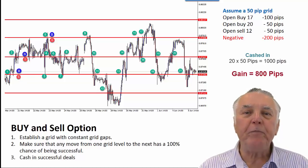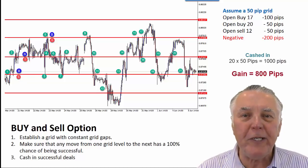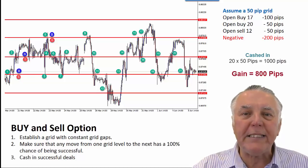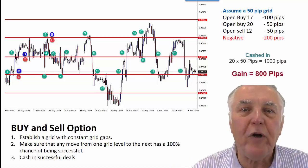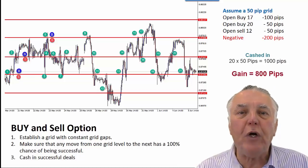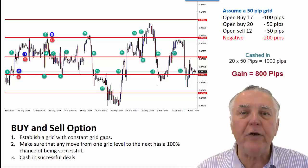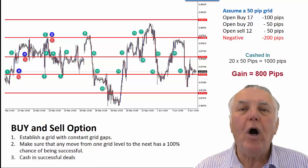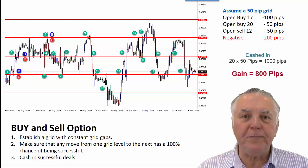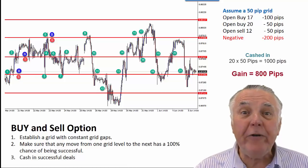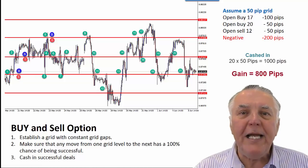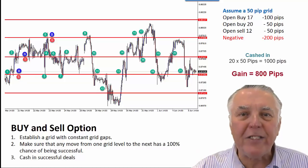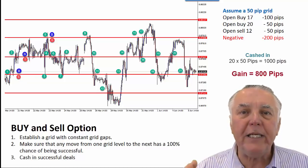The first rule is you take the chart that you want to trade and you divide it into equal distance lines — like I've shown here, see the red lines. Those are what I call grid lines. So what you've done is you've created a grid on your trading chart. Then you start trading. The secret is to make sure that any move from one grid line to the next will result in a positive trade.